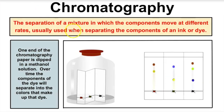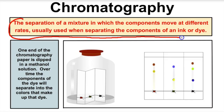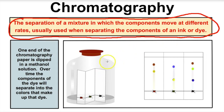The next separation technique is called chromatography. Chromatography is the separation of a mixture in which the components move at different rates. We usually use chromatography when we're trying to separate the components of an ink or a dye. For example, this right here is special chromatography paper. If we put a little drop of black ink on here — black ink is a mixture of several different pigments or dyes — and place this chromatography paper in a jar with a solution of methanol at the bottom, which helps aid in the chromatography process.